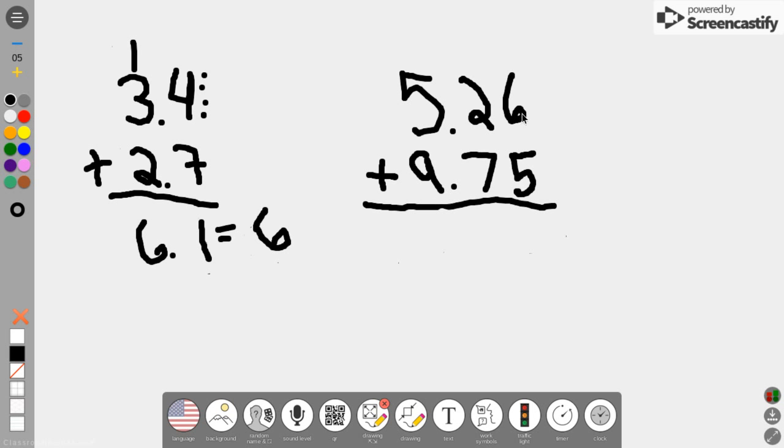First I'll begin with the hundredths place. 6 plus 5 is 11. Carry the 1. 2 plus 1 is 3, plus 7 gives me 10. Carry the 1. That's 0 there, carry the 1 up here.